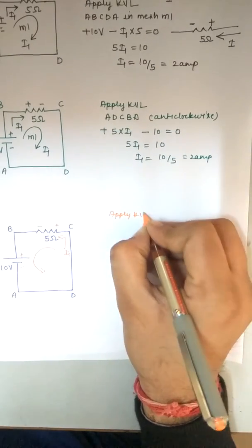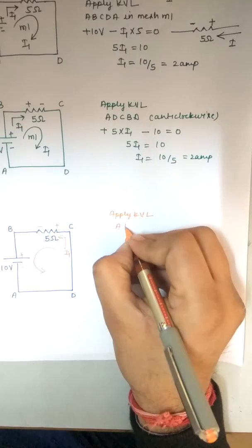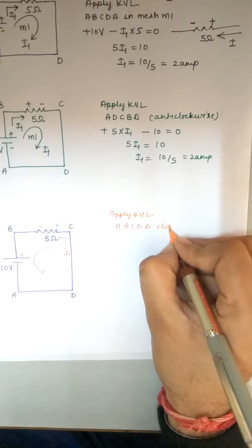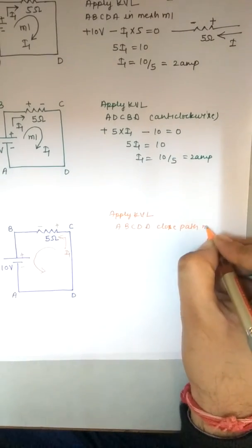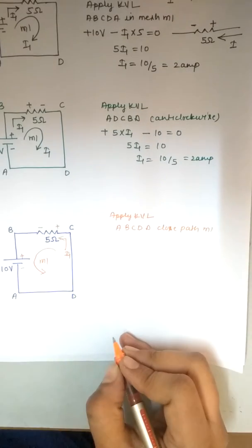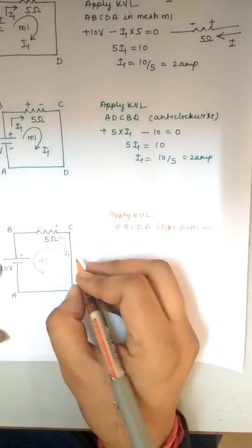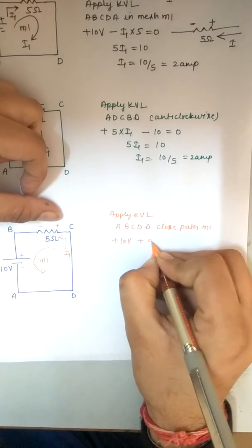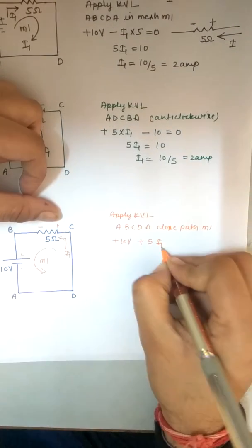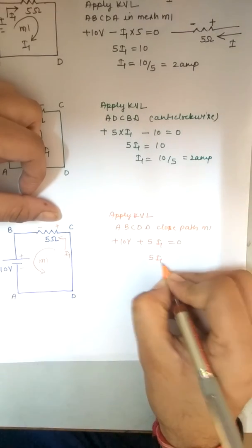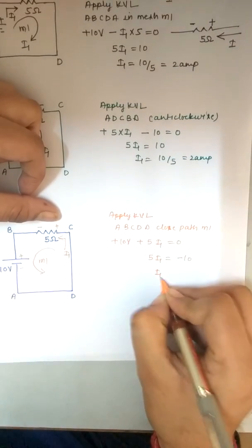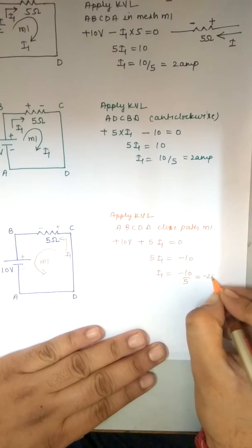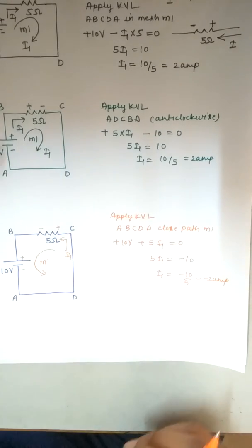Apply KVL starting from a, b, c, d, a — closed path, mesh M1. Starting from a: the last terminal of the battery is plus, so plus 10 volts; then plus 5·I1 equals zero. So 5·I1 = −10, and I1 = −10/5 = −2 amperes.